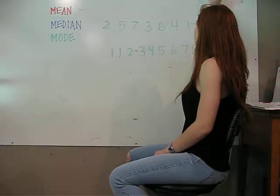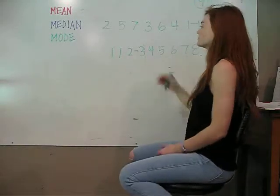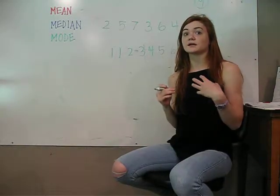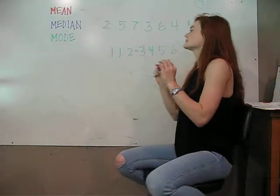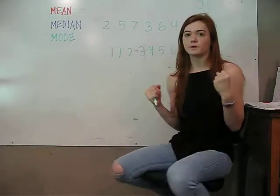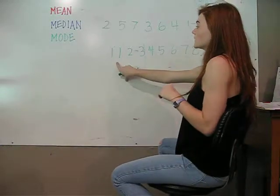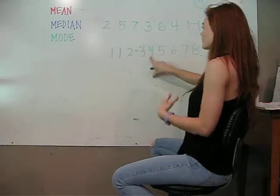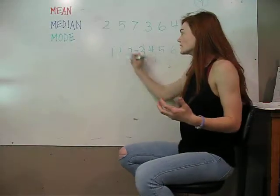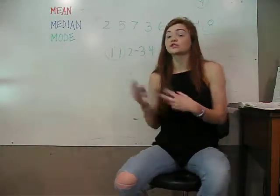We have 9 numbers. Now that they're in order, to find the mode it's literally this simple — you take the number that occurs the most often. Here you can clearly see there are two 1s, and one of everything else. So the mode is going to be 1, because it occurs the most. There are two of them.